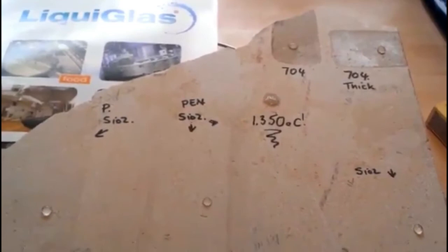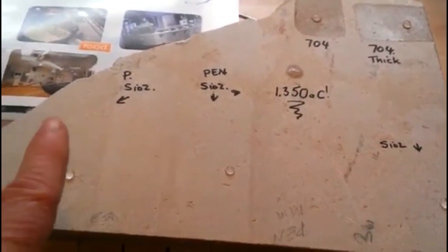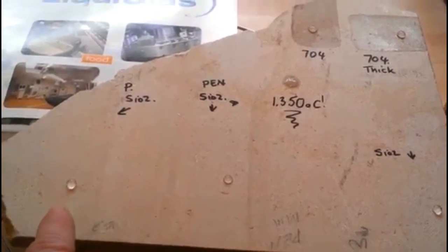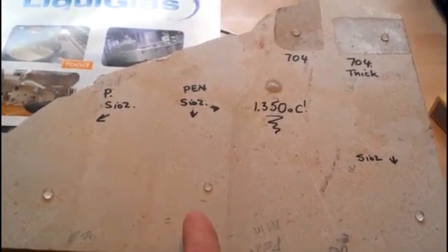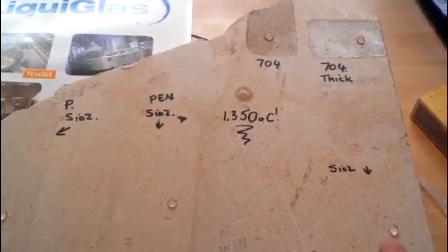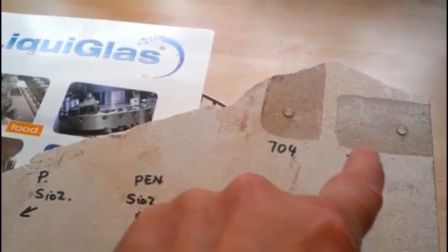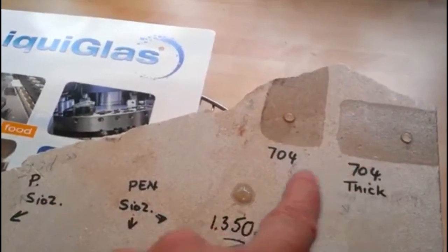We are often asked if our coatings are fire retardant or fireproof. Here we have standard SiO2, so nanoscale SiO2, penetrative SiO2 (again nanoscale, another variant), and our 704 coatings which are of course significantly thicker at the micron level.